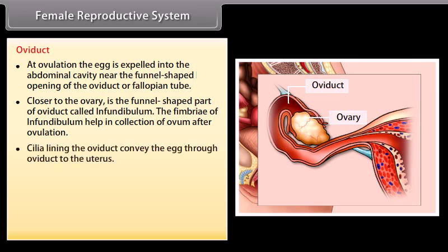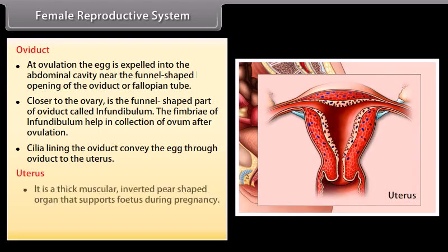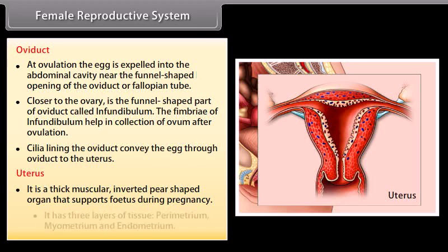Cilia lining the oviduct convey the egg through the oviduct to the uterus. The uterus is a thick muscular, inverted pear-shaped organ that supports the fetus during pregnancy. It has three layers of tissue: perimetrium, myometrium, and endometrium.